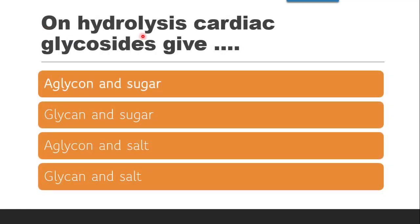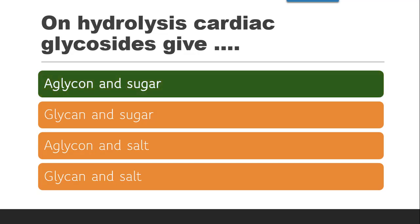The next question is: on hydrolysis, cardiac glycosides give what? Cardiac glycosides on hydrolysis give aglycone and sugar. So the correct answer is aglycone and sugar.